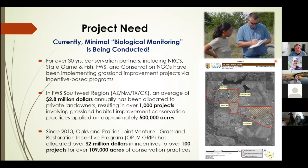In our Southwest Region, just through the Partners Program alone, we've allocated about 2.8 million dollars annually to private landowners, resulting in over a thousand projects involving some form of grassland habitat improvement — easily 500,000 acres. The Oaks and Prairies Joint Venture since 2013 has a grassland restoration incentive program known as GRIP, which has allocated 2 million dollars in incentives to over a hundred projects covering 109,000 acres.